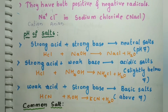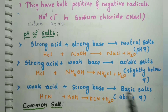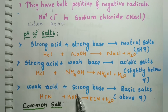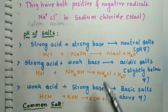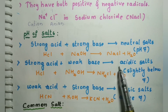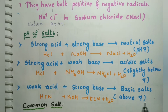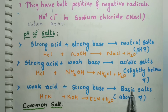When a weak acid reacts with a strong base, basic salts are formed. For example, HCN (weak acid) reacts with KOH (strong base) to form KCN and water. This happens because of incomplete neutralization — incomplete neutralization results in either acidic or basic salts.